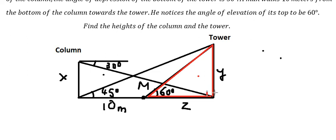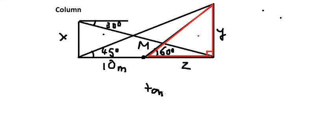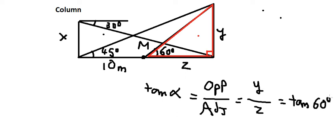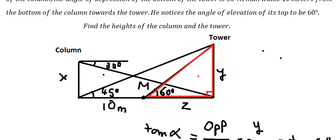We have a right angle, so we apply tan α. The opposite is Y, the adjacent is Z, and we have 60 degrees here. We also have 45 degrees here. Now I highlight the green color for the next triangle.